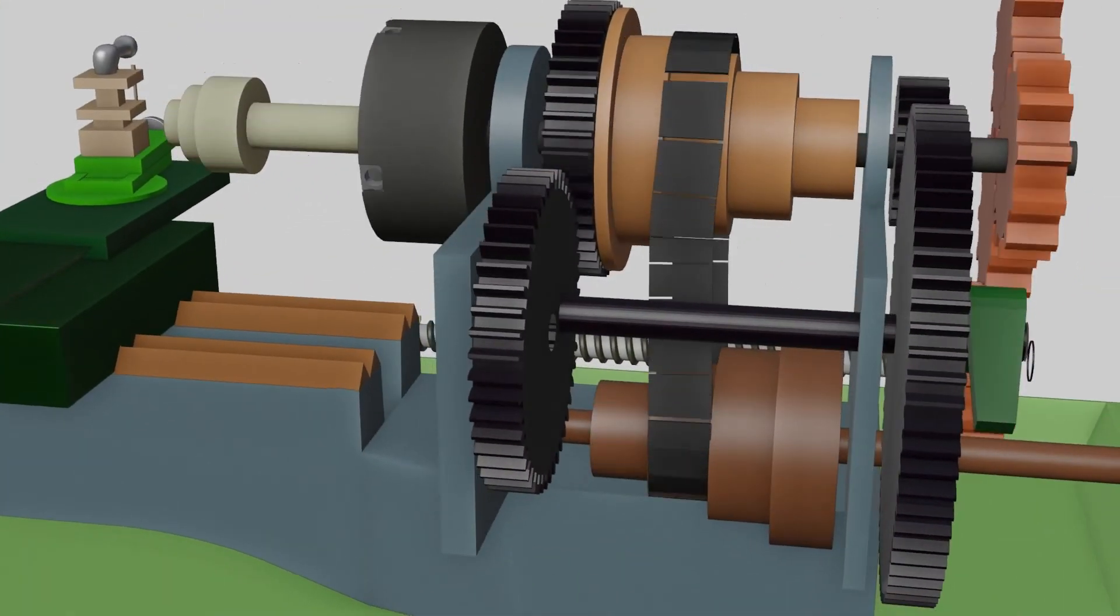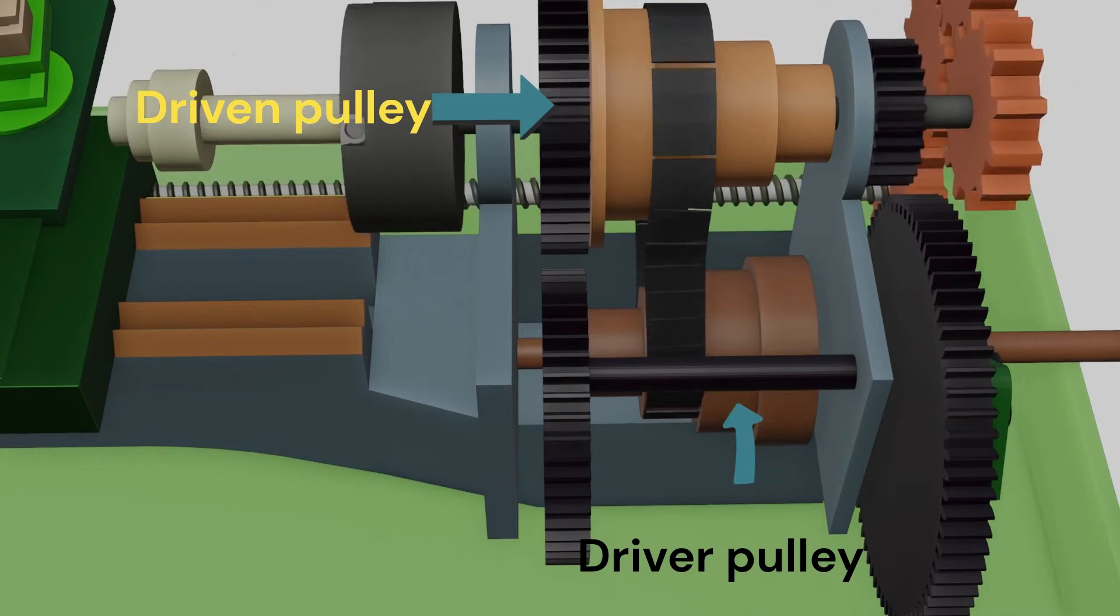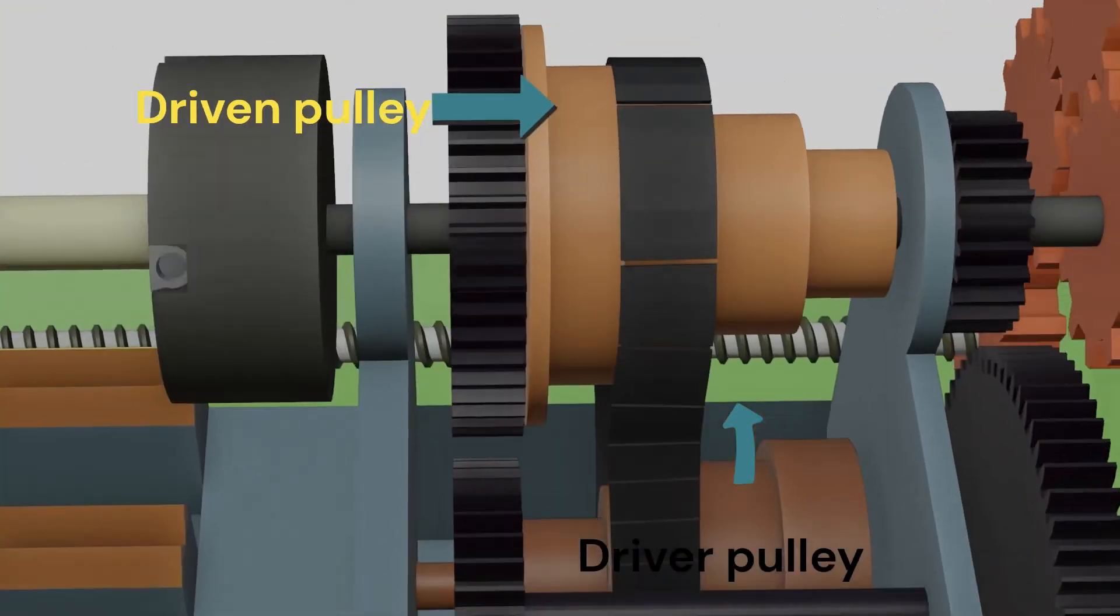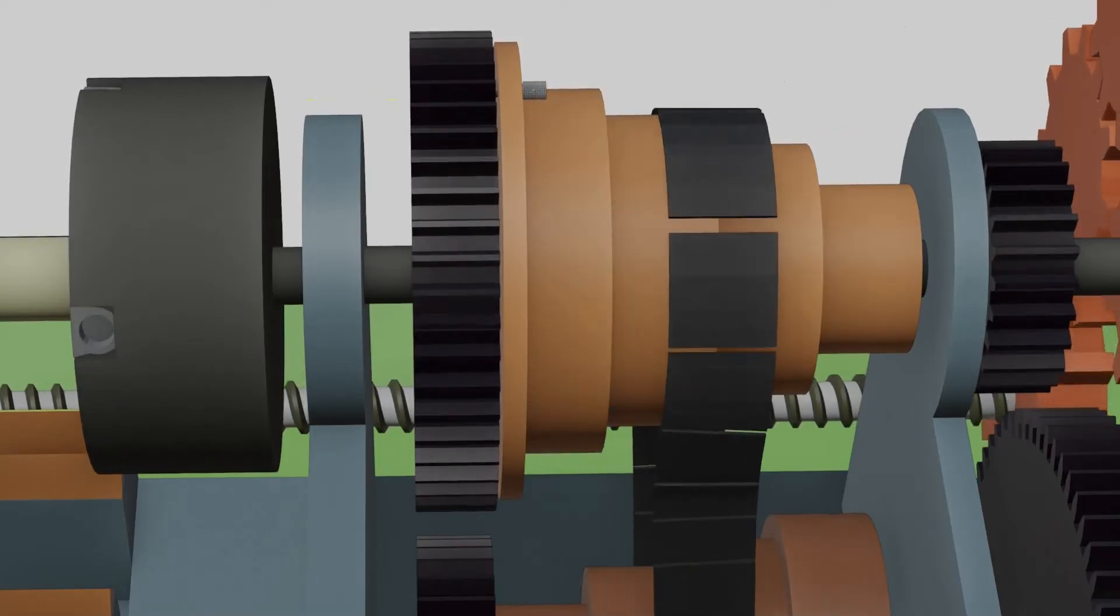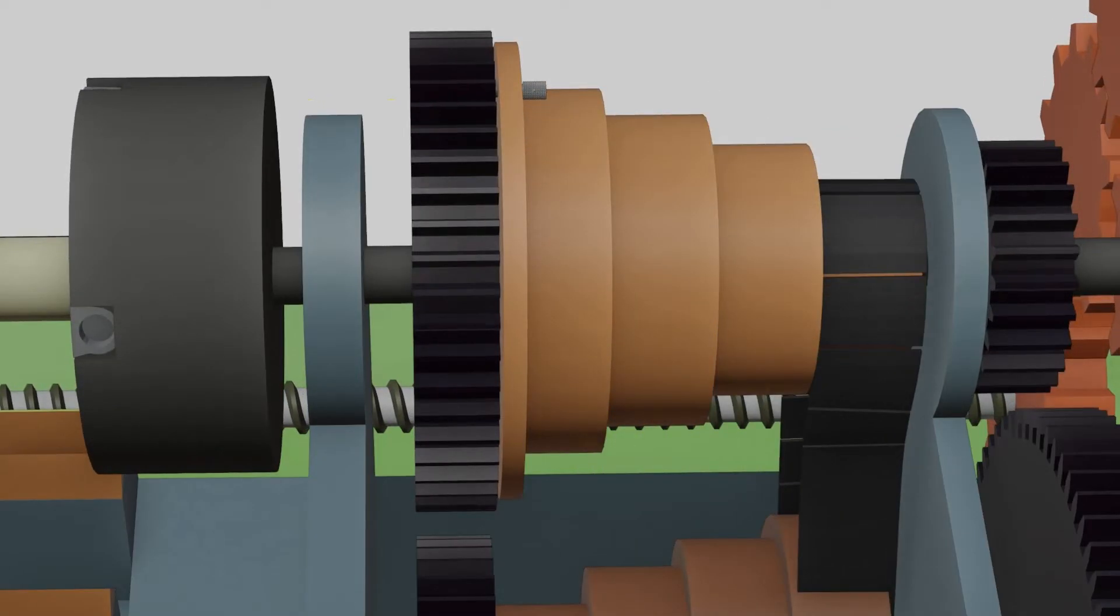Step cone pulley which is connected with motor is called driver pulley. Step pulley connected with spindle is called driven pulley. We can change spindle speed and torque by adjusting the belt on the pulley.